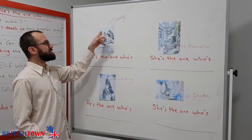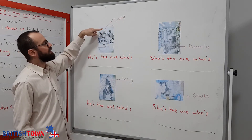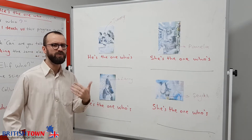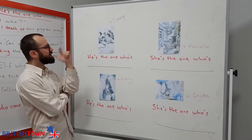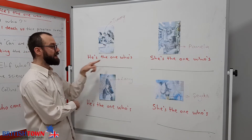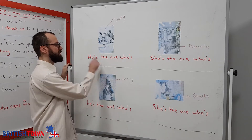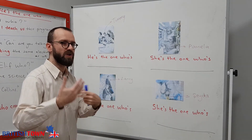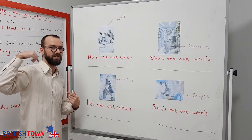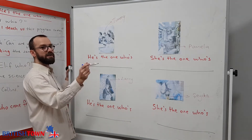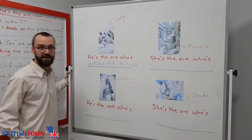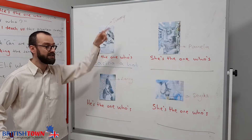We're going to ask about Timi. Which one is Timi? Timi'nin bir şapkası var — he's wearing a hat. So how do we complete the sentence? 'He is the one who is wearing a hat.' Timi is the one who is wearing a hat — Timi şapka giyen olan.